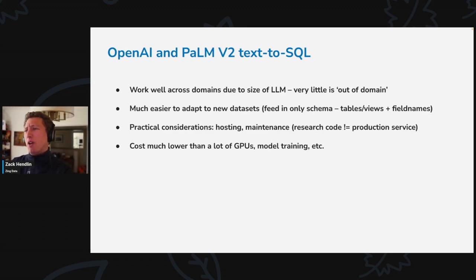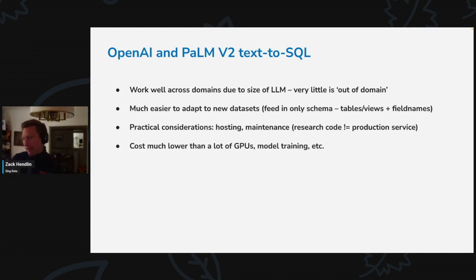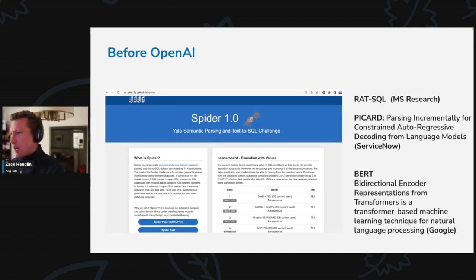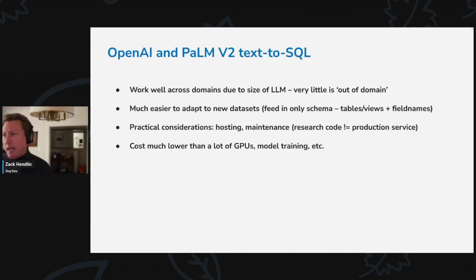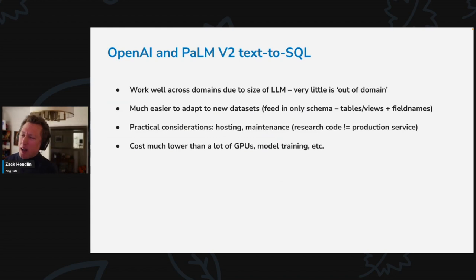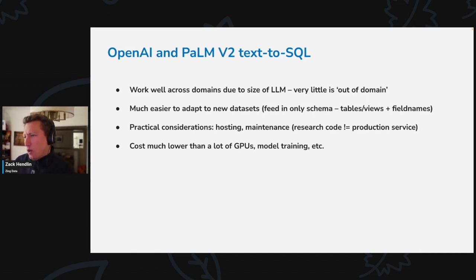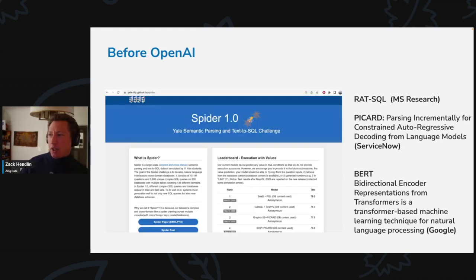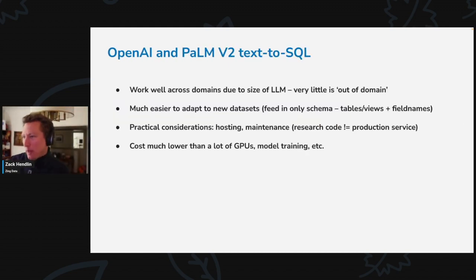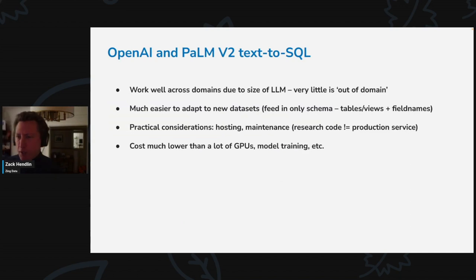It also made things much easier to use. You could feed in just table names or views and field names and get out SQL as a result — not always right, but that was the general idea. A lot of the practical considerations of the previous models — needing tons of memory, setting up infrastructure, training them on your schema — were radically simplified when you can just call an API to OpenAI. Research code does not a production service make, and OpenAI made that a step change easier and more affordable, because you didn't need to provision GPUs for model training.